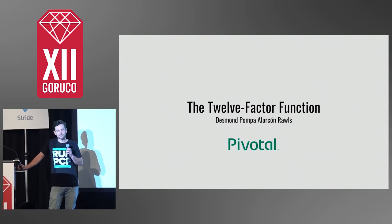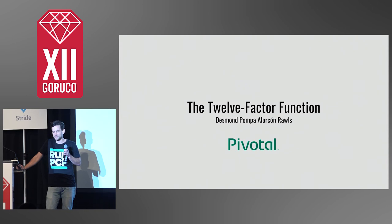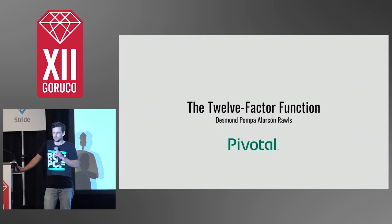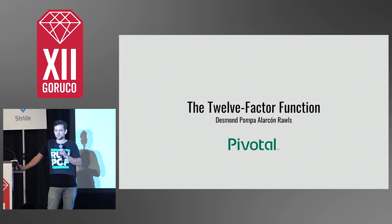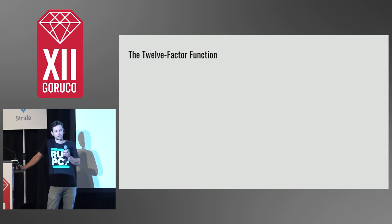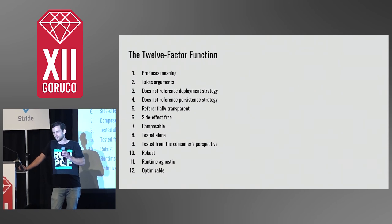The simplest and most powerful idea I've picked up in software development is that design isn't about putting things together, it's about pulling things apart. The 12-factor function pulls apart meaning and magic. It's a set of 12 constraints to isolate meaningful functions.